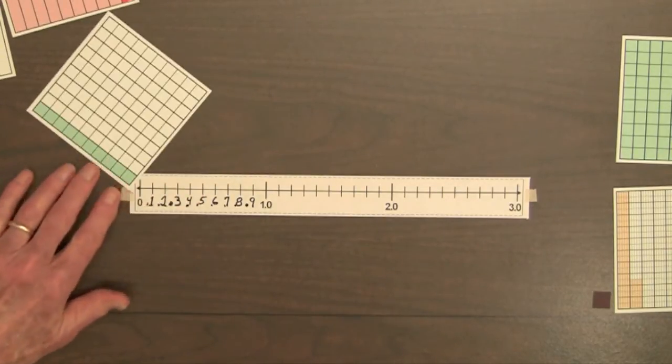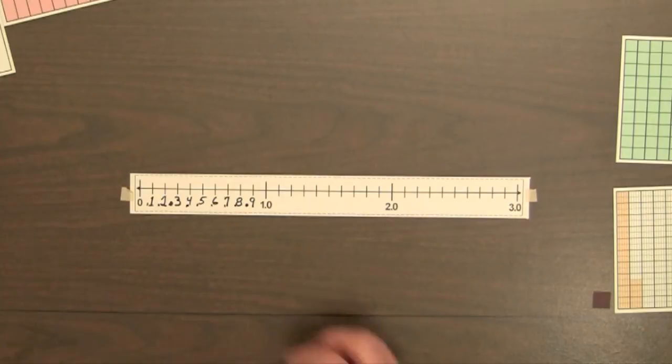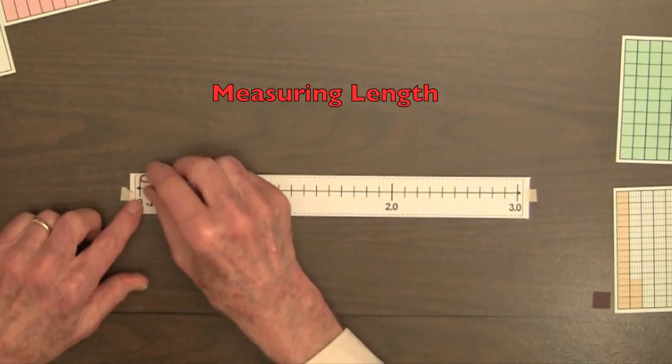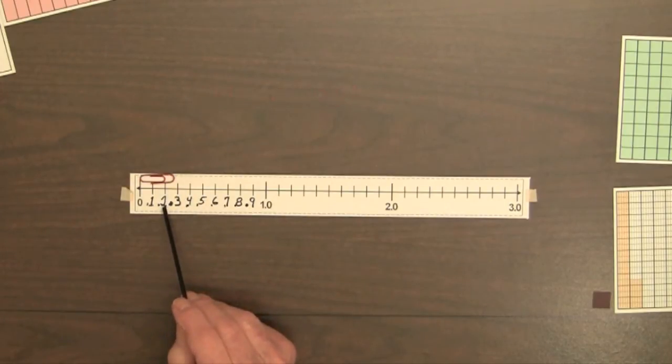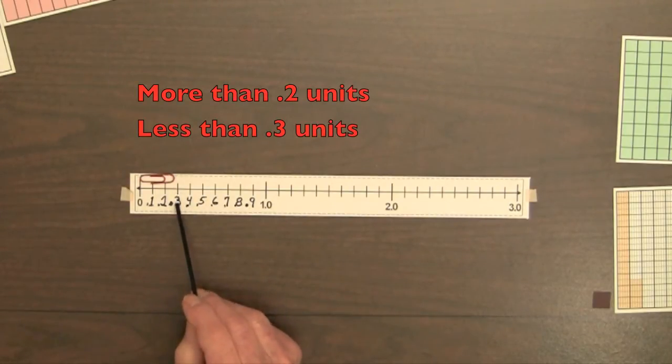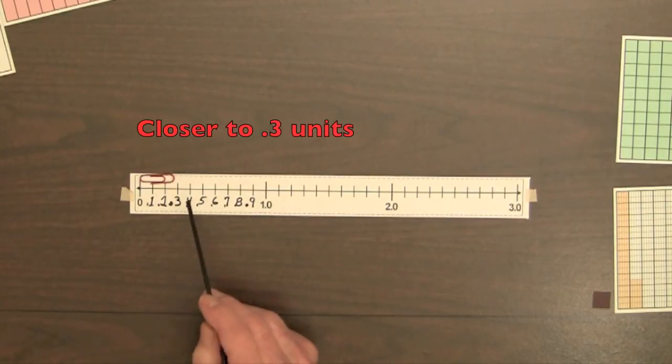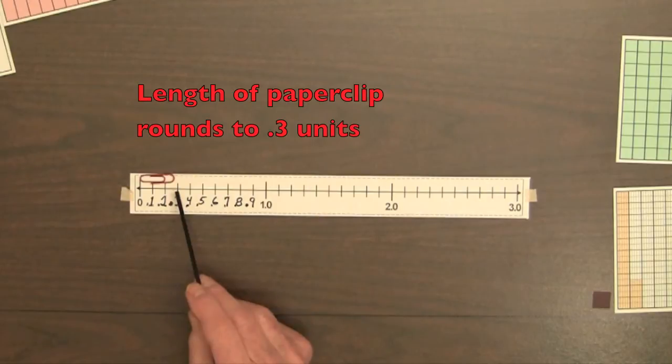Now one use of the number line is measuring length, so we'll line up a paper clip here, starting at the zero point. The length of this paper clip is more than 0.2 units and less than 0.3 units, but closer to 0.3 units, so the length of the paper clip rounded to the nearest tenth is 0.3 units.